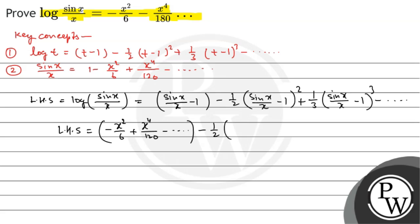Then, minus half multiplied by (minus x squared divided by 6 plus x to the power 4 divided by 120, minus so on) whole squared, plus one-third multiplied by (minus x squared divided by 6 plus x to the power 4 divided by 120, minus so on) to the whole power 3, minus so on.